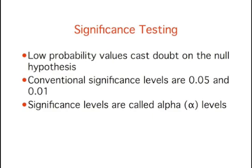When a researcher concludes that the null hypothesis is false, the researcher is said to have rejected the null hypothesis. The probability value below which the null hypothesis is rejected is called the alpha level, or simply alpha. It is also called the significance level.